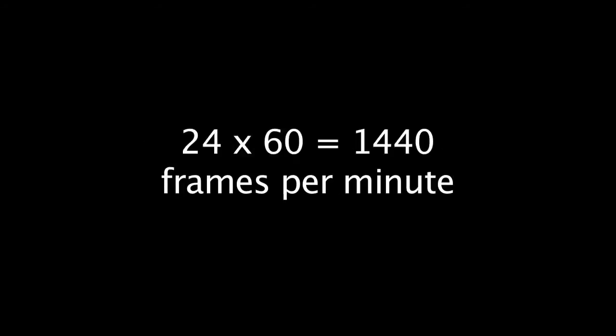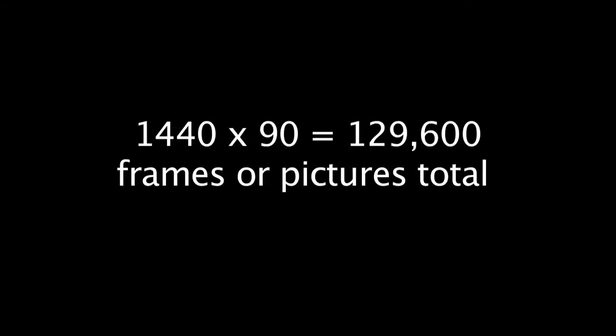Even with the help of a computer, animation is an extremely slow process. In order to figure out how many frames we need for a feature-length movie, which is 90 minutes, we'd have to take our 24 frames per second and multiply it by 60 seconds. That would make it 1,440 frames per minute. We can take that 1,440 and multiply it by 90 minutes, and we get 129,600 frames. This would be the total number of frames we'd need for a feature-length film.